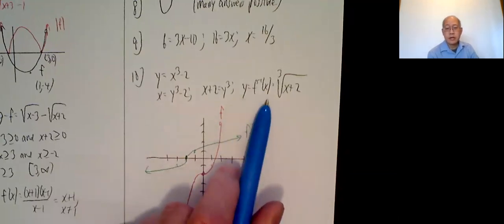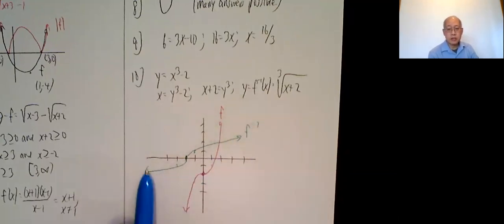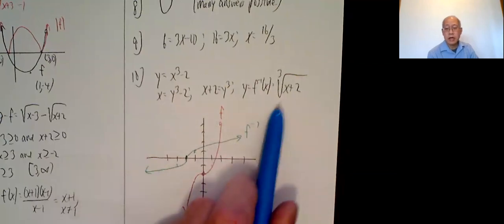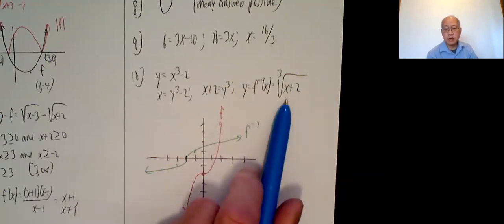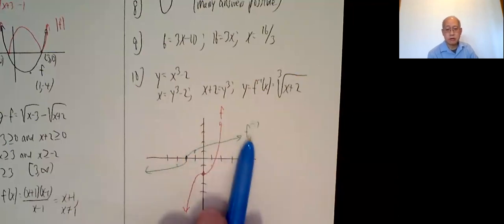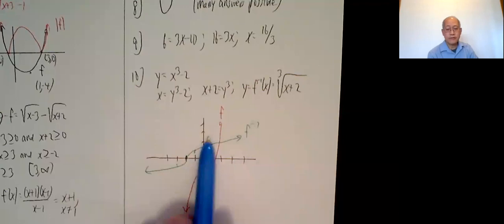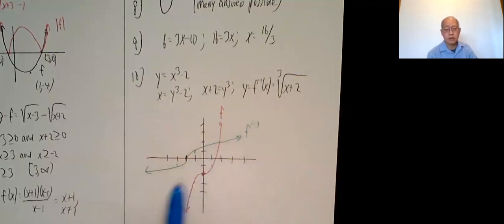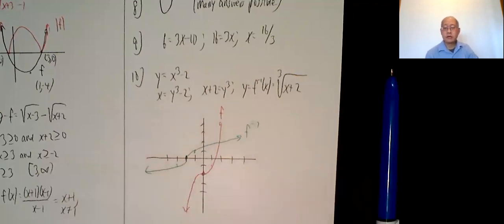And this one, your basic cube root function goes something like so. And if you replace x with x plus 2, that moves it 2 to the left. So negative 2 is 0, and then I draw my basic cube root function. So there's f, and there's f inverse. If you wanted to, you could also draw the line y equals x, which gives me your image right over there. All right. So this is math 222, Exam 2, answer key. Thank you.